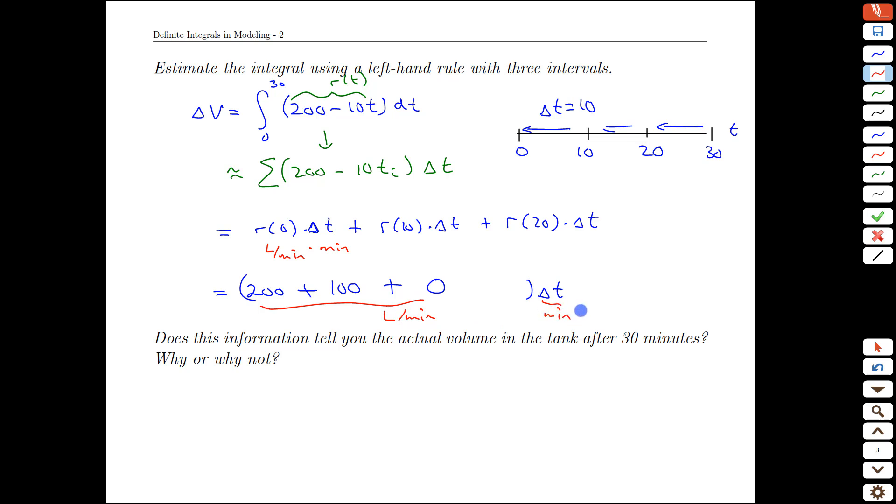And again, we have that all of these are liters per minute. All of these are in minutes. And in fact, we can be a little more explicit about the delta T now. That was 10 minutes for each interval. And we end up with 300 times 10, which would be 3000.